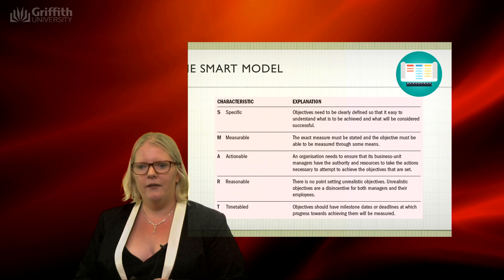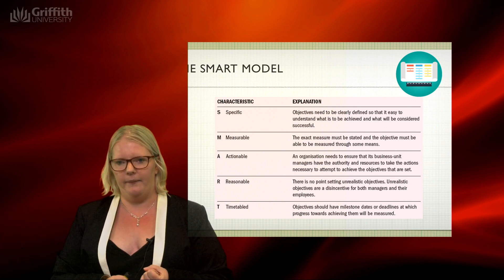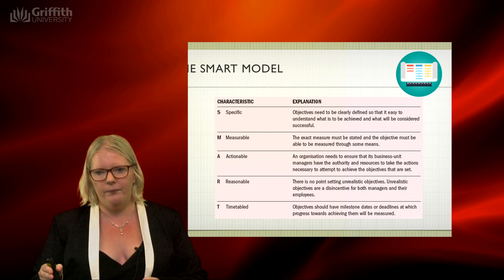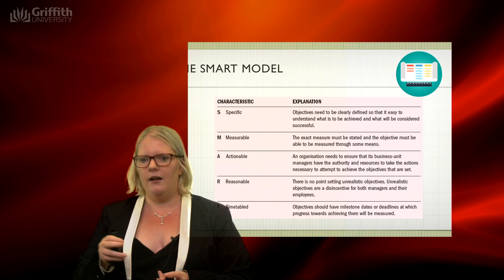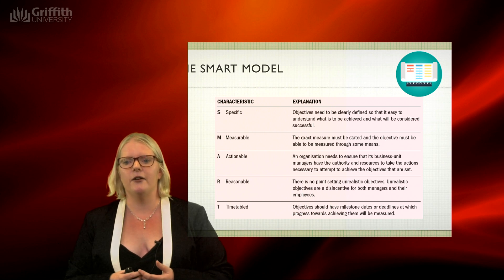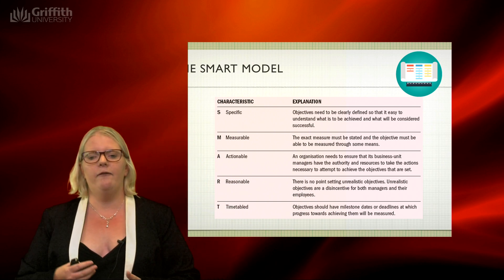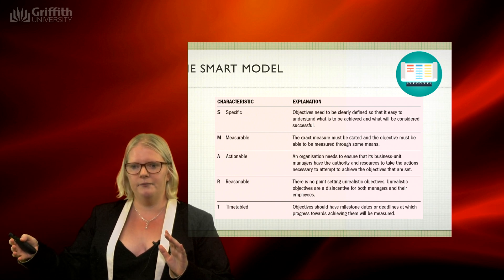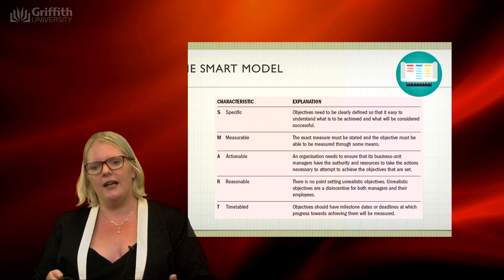For an objective to be specific, it needs to be clearly defined — it needs to tell exactly what you want done. It needs to be measurable, with an output you can track to see if you're getting there. It needs to be actionable, so you can direct employees to do X, Y, and Z. It needs to be reasonable — employees need to feel they can achieve it. And finally, it needs to be timetabled, so you know when everything needs to be done to achieve the long-term goal.